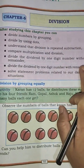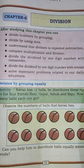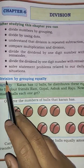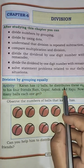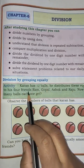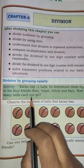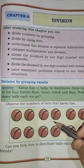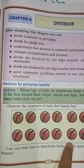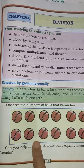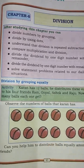Today in this class we are going to study about the new lesson that is division. So let's start this lesson with a new concept, that is division by grouping equally. Karan has 12 balls. He distributes these equally to his four friends: Ram, Gopal, Ashok and Raju. How many balls does each one get? Karan needs to distribute these 12 balls equally to his four friends.